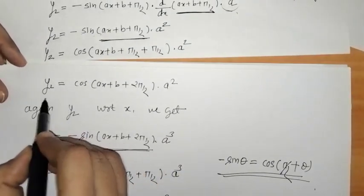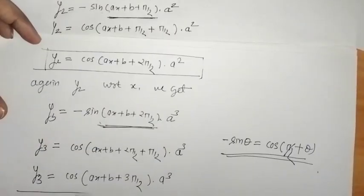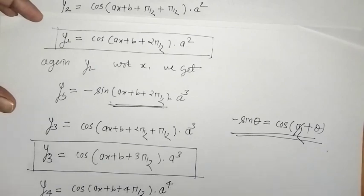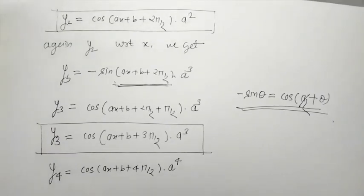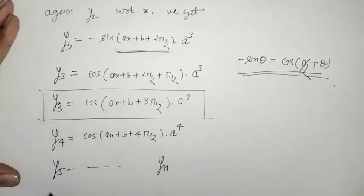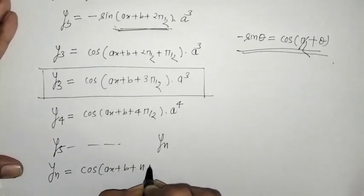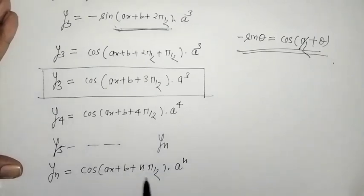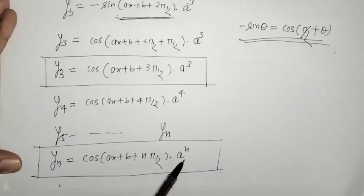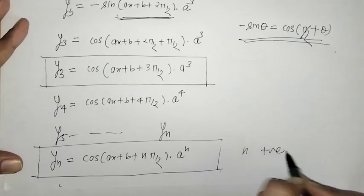We can check the pattern: y1, y2, y3 are established. In the same manner we can write y4 = cos(ax + b + 4π/2) · a⁴. Similarly y5, y6, and so on. Therefore the nth derivative yn = cos(ax + b + nπ/2) · aⁿ, where n is a positive integer.